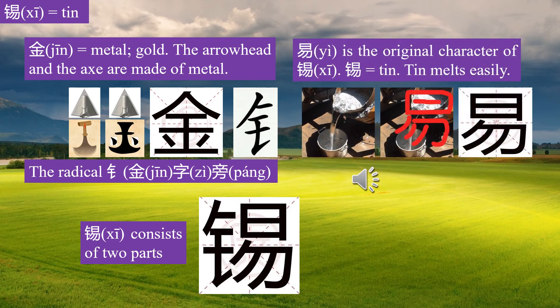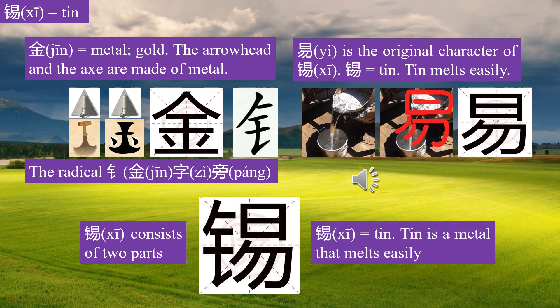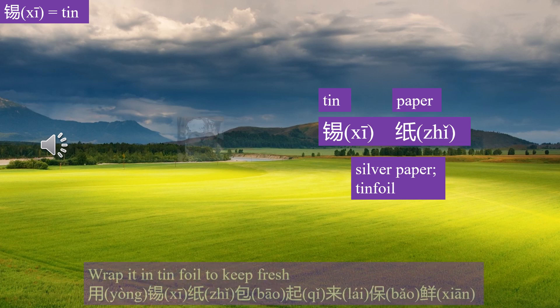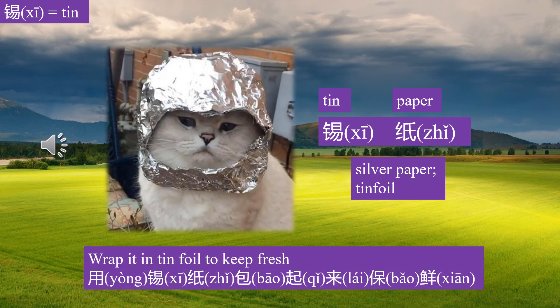Yi is the original character of Xi. Xi means tin — tin is a metal that melts easily. 锡纸 means tin foil. 用锡纸包起来，保鲜 — wrap it in tin foil to keep fresh.